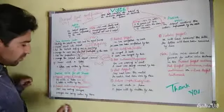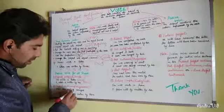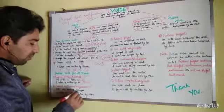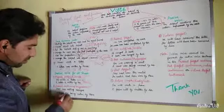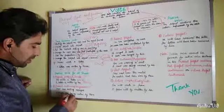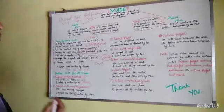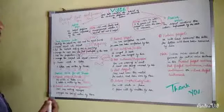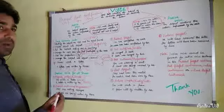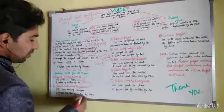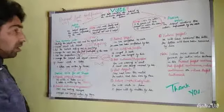For present continuous or progressive tense: the structure is subject + helping verb + gerund form of verb + object. For example, 'They are eating oranges.' In passive, the object comes first, the helping verb remains the same, and we add 'being' — which is the continuous or progressive form of the 'be' verb — followed by the third form of the verb. So it becomes: 'Oranges are being eaten by them.'